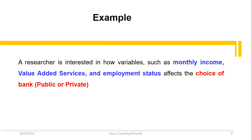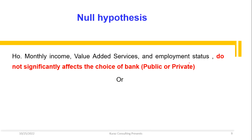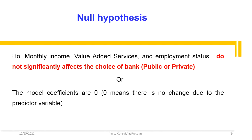A researcher is interested in how variables such as monthly income, value-added service, and employment status affect the choice of bank — public or private. The null hypothesis in this case is: monthly income, value-added services, and employment status do not significantly affect the choice of bank. In other words, the model coefficients are zero, meaning there is no change due to the predictor variables.